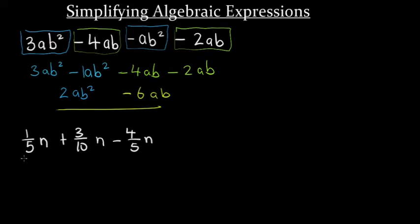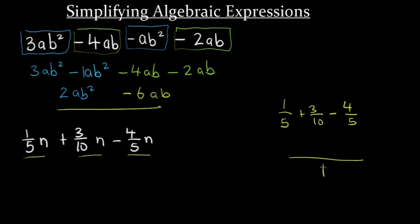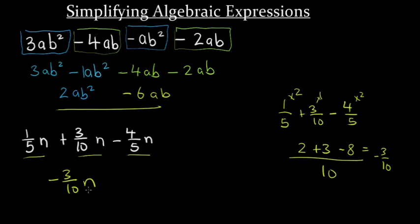For the final example, all three terms are like terms, so we work out the coefficients. We have fractions with different denominators: one-fifth plus three-tenths minus four-fifths. The highest common denominator for 5 and 10 is 10. Converting: 5 into 10 goes 2 times, so 2 times 1 is 2; 10 into 10 is 1 time, so 1 times 3 is 3; and 5 into 10 is 2 times, so 2 times 4 is 8. Then 2 plus 3 is 5, and 5 minus 8 equals negative 3 over 10. The answer is negative three-tenths times the variable.